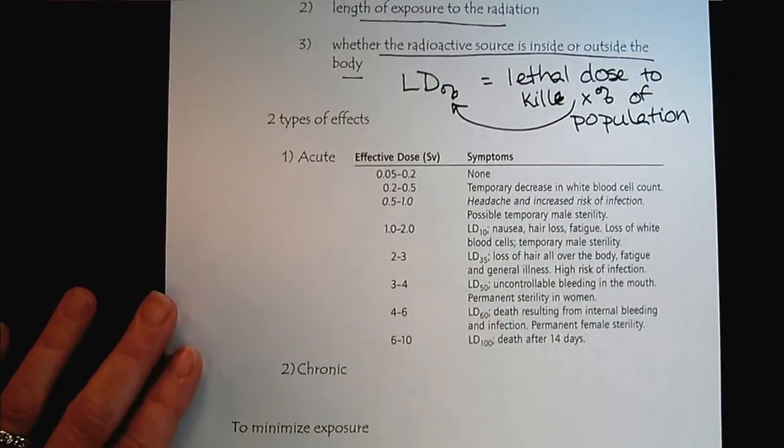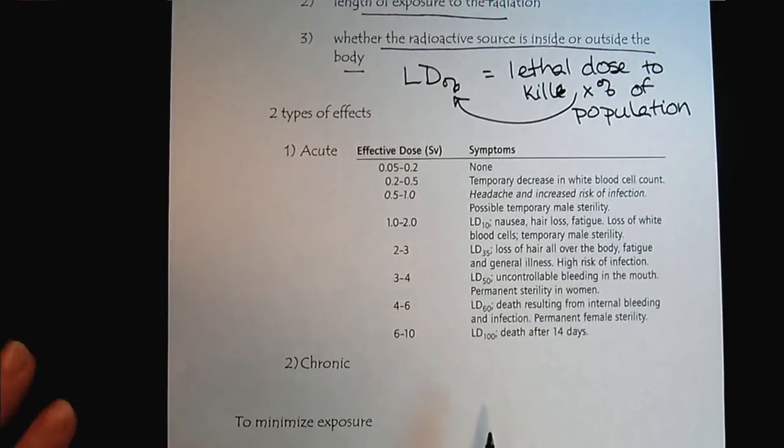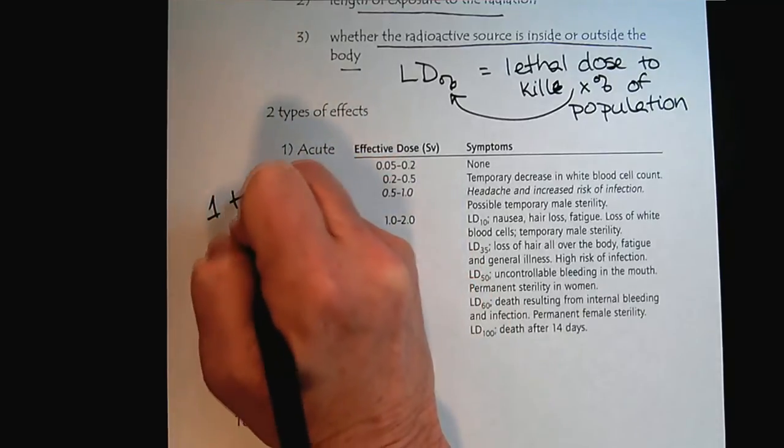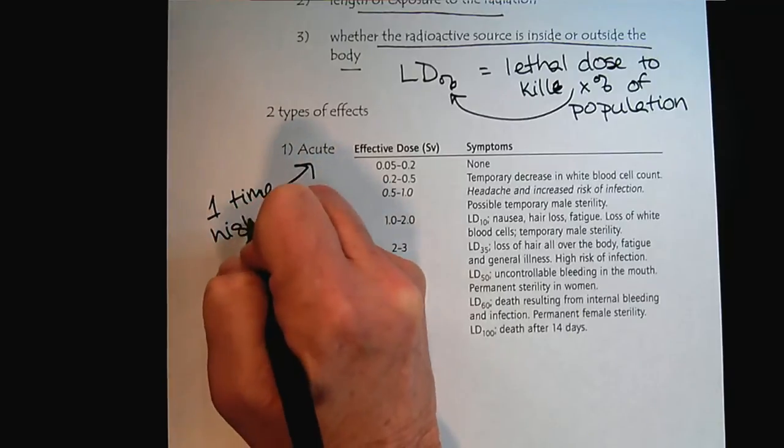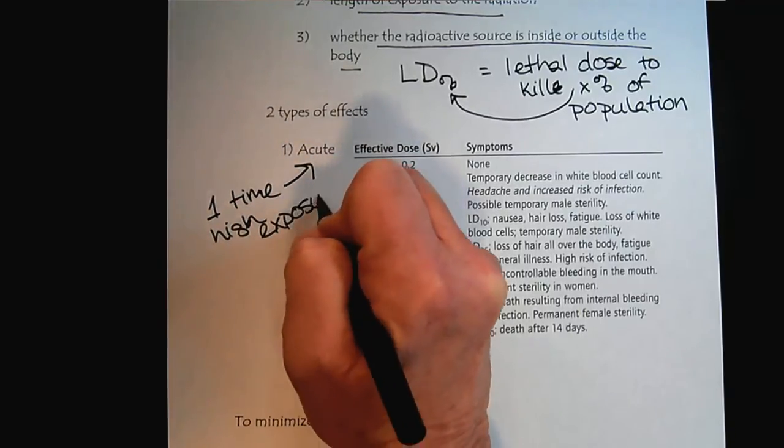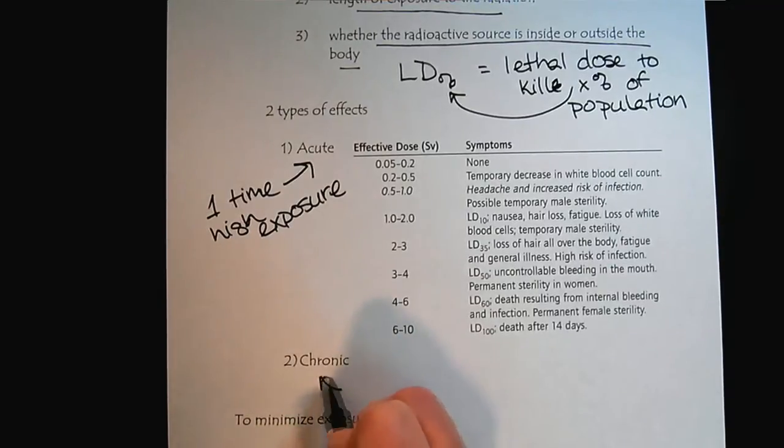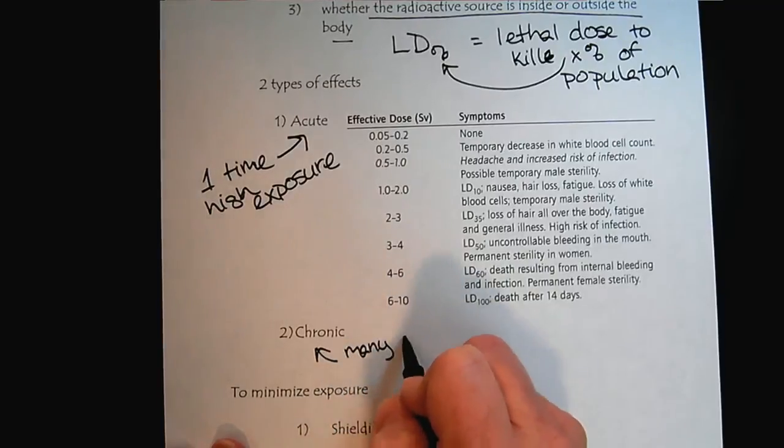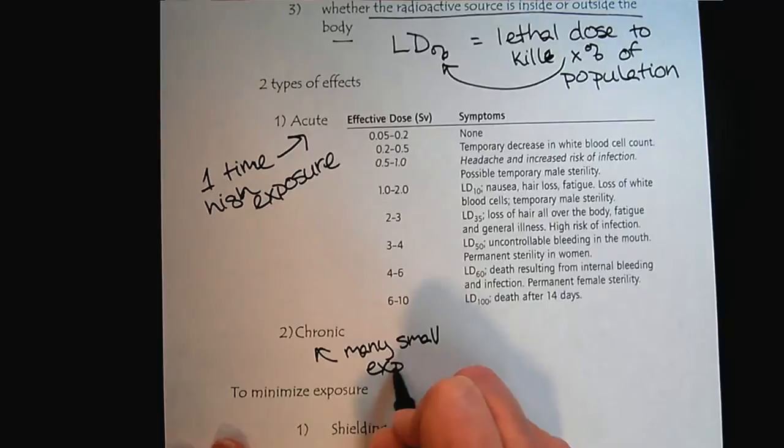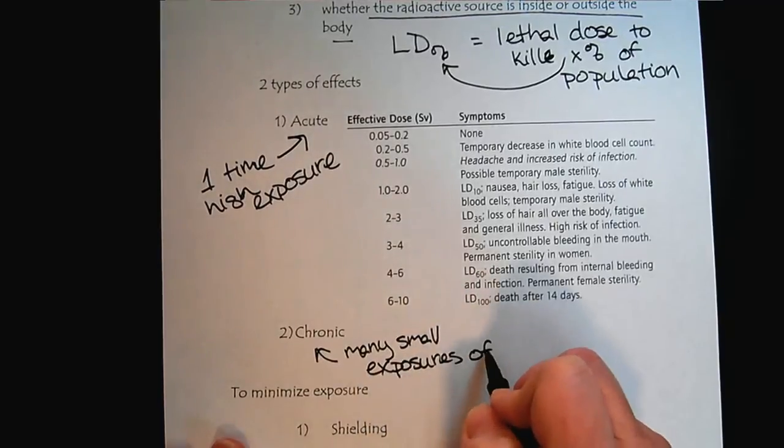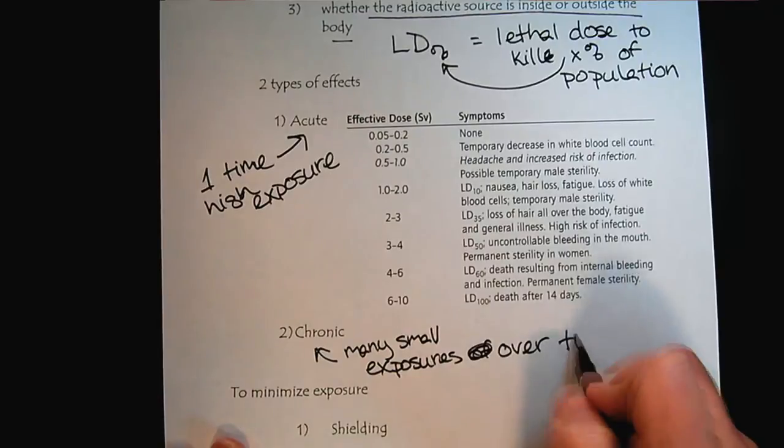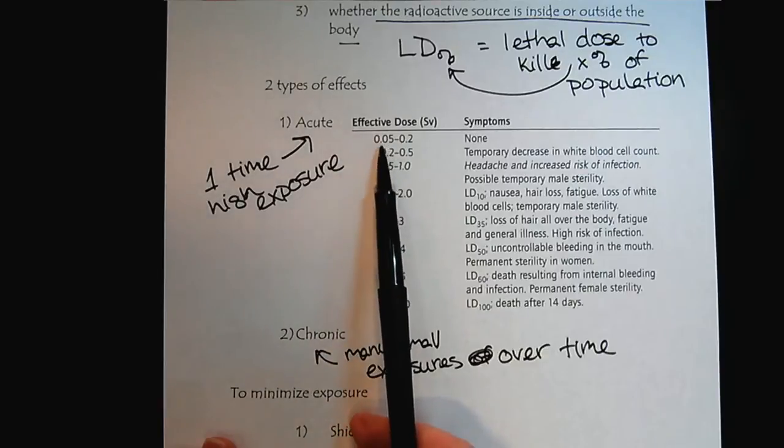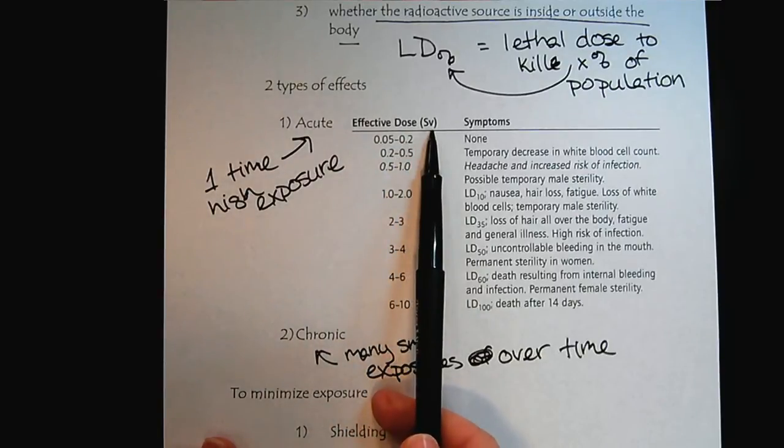So let's look at what happens with radiation. We're going to look at acute exposure, this is like a one-time high exposure versus chronic, where we have many small exposures over time. We can see if we have an acute exposure in the 0.05 to 0.2 effective dose of sieverts, no problem.